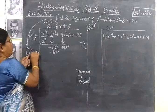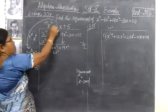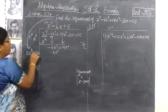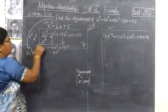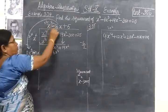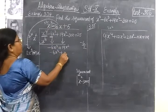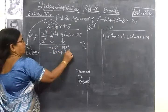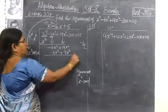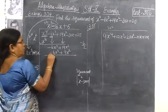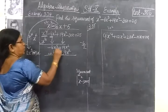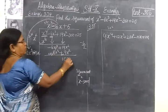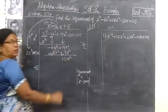Then minus into minus is plus. For this only you should be careful — here minus, here also minus. So plus 9x square. Change the sign: plus to minus. So 10x square.